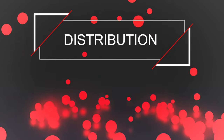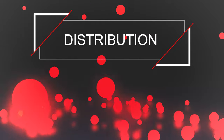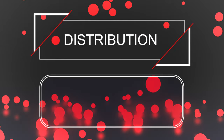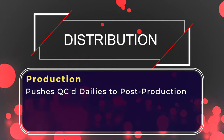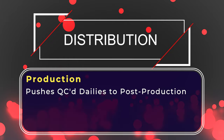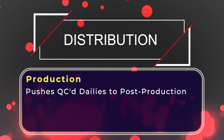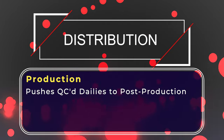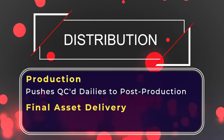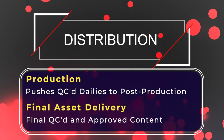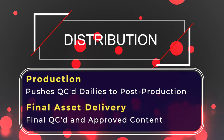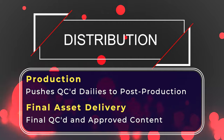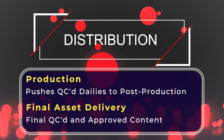Distribution. Distribution is performed during and after production completes. During production, distribution pushes dailies and newly locked picture to the post-production team until the final scene has been completed. Final delivery is the distribution of QC'd and approved content to local broadcasters, theaters, and worldwide distribution channels.